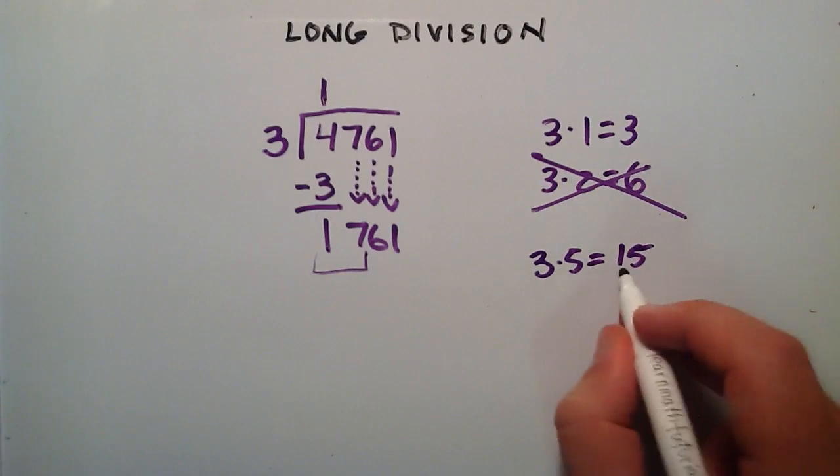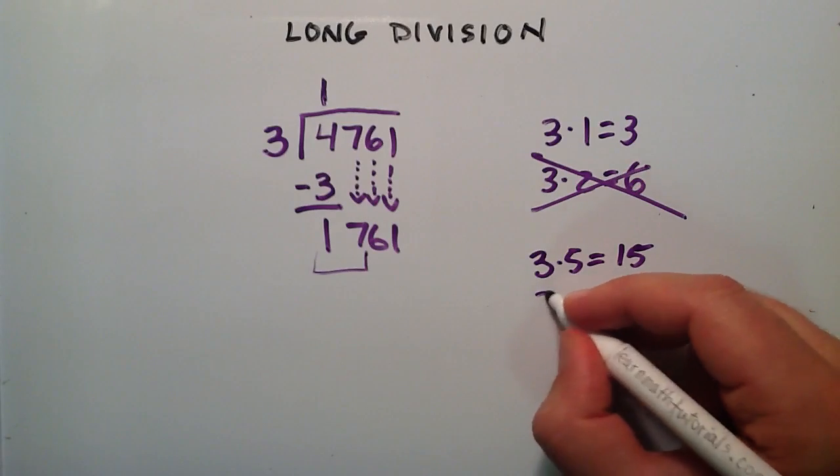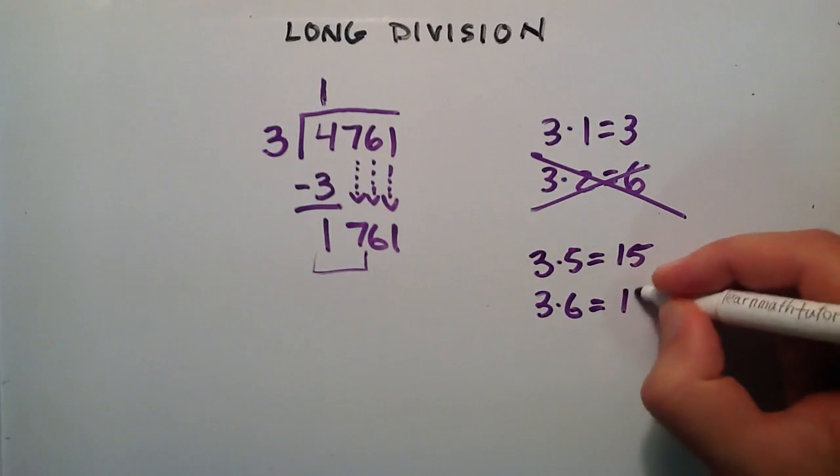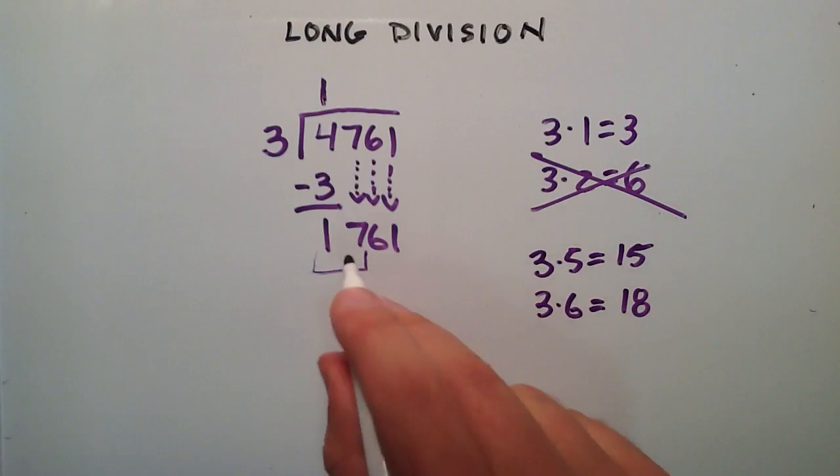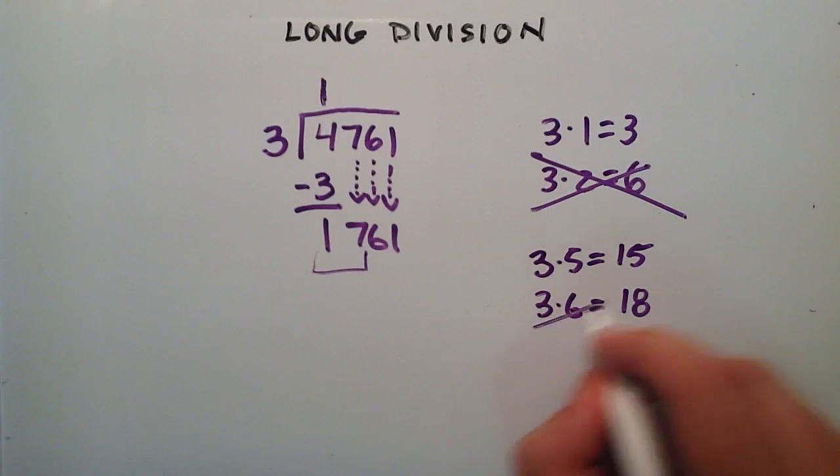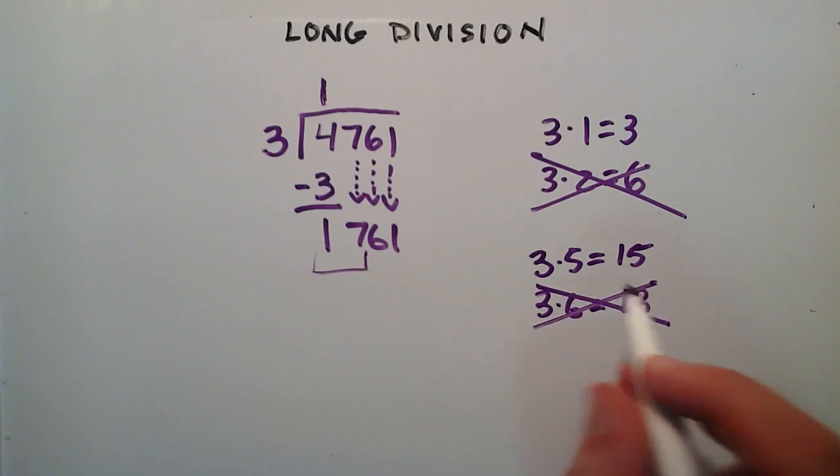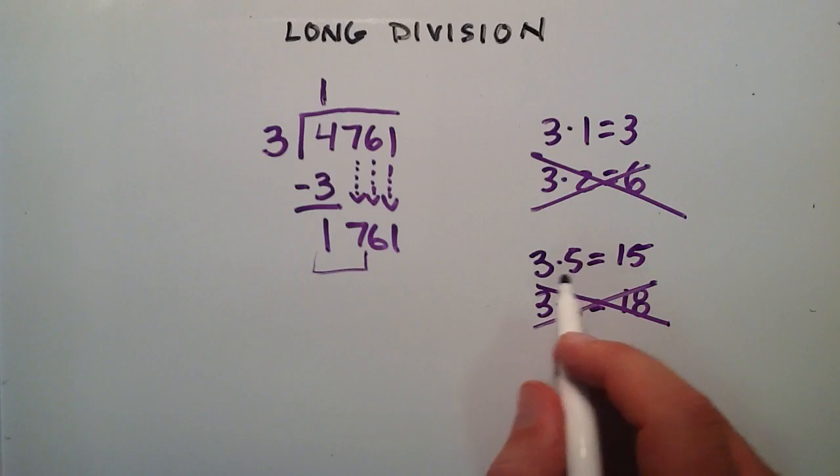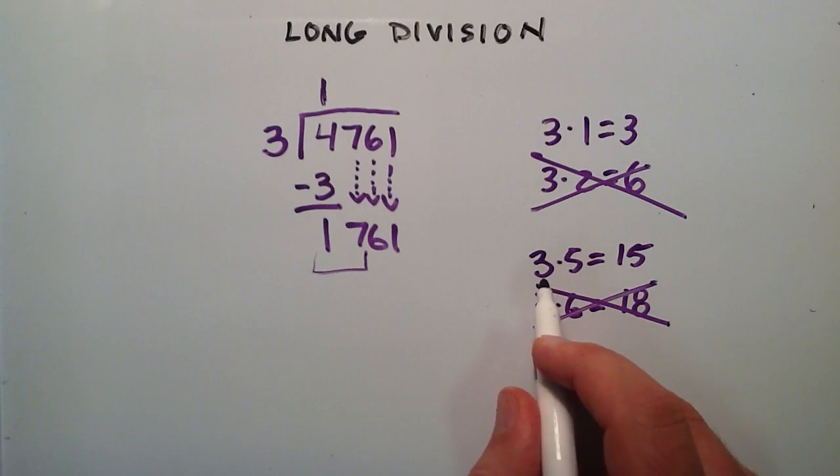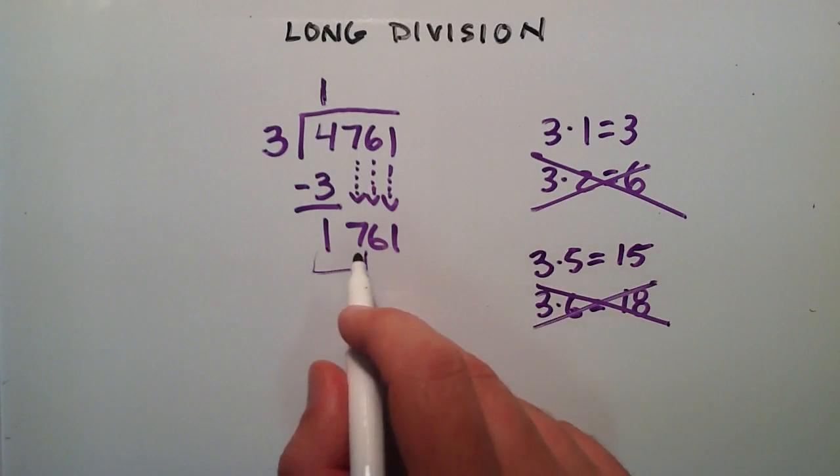So 15 is less than 17. If we tried 3 times 6, we would find out that 3 times 6 is 18, and 18 is bigger than 17. So therefore this result doesn't work. And it turns out that 5 is the biggest number that you can multiply 3 by and have an answer less than 17.